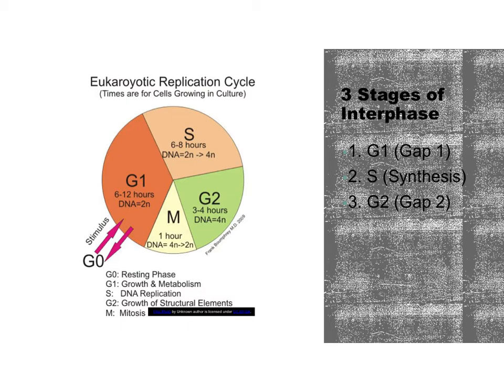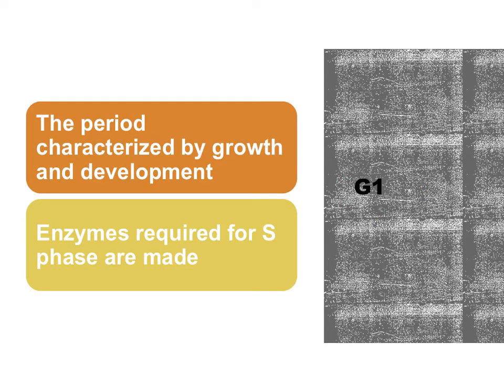Interphase can be broken up into three different stages: G1, which stands for Gap 1; S, which stands for synthesis; and G2, which stands for Gap 2. The first stage is G1, the period immediately after the cell divides. It's characterized by growth and development, where the cell carries out its normal functions and starts to prepare to replicate the DNA. Enzymes required for S phase are also made during this phase.